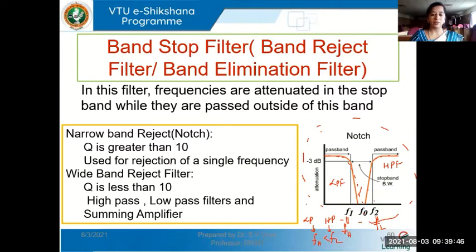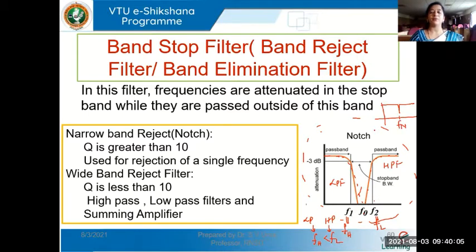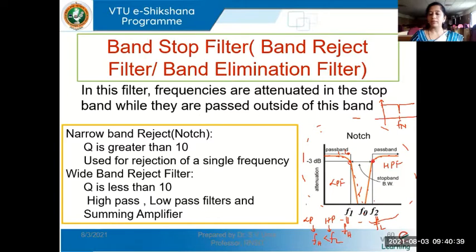In a narrow band reject filter, the frequency response looks like a notch being formed in wood or some material. It is able to reject a single frequency called the notch frequency FN. Hence, this narrow band reject filter is also known as a notch filter, and the wide band reject filter frequency response may reject a wide range of frequencies. When finding the cutoff frequencies, you should come down by three decibels from the pass band value. If the pass band gain is 1.6, you come down by 3 dB to get the cutoff frequencies.